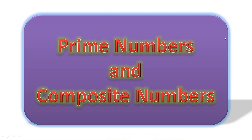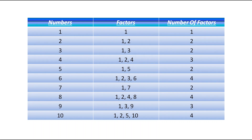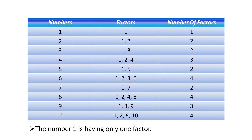Hello, dear students. Today we are going to learn prime numbers and composite numbers. Here is a table with three columns. In the first column, numbers 1 to 10 are present. In the second column, there are the factors of those numbers. In the third column, there is the number of factors each number has. The number 1 has only one factor. Some numbers have only two factors — 1 and the number itself — and those numbers are 2, 3, 5, and 7. Such numbers are called prime numbers.